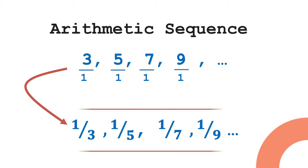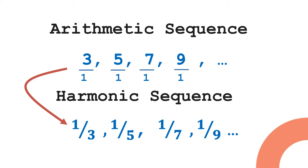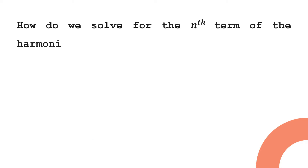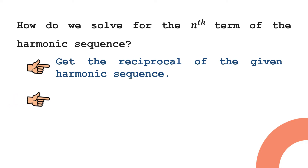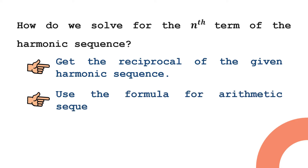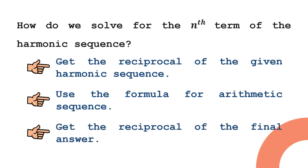To solve for the nth term of the harmonic sequence, take note of these three easy steps. First, get the reciprocal of the given harmonic sequence — this gives you the terms of an arithmetic sequence. Second, use the formula for arithmetic sequence. Third, get the reciprocal of the final answer, which gives you the term of the harmonic sequence.